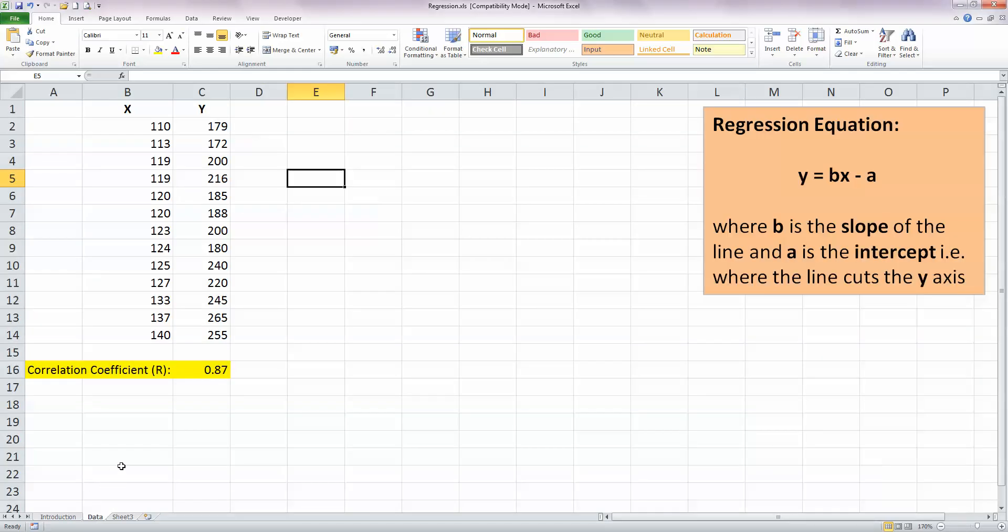So before we start, let's take a look at our data. We've got two sets of data representing variable x and variable y. We've got some values for each of those data here. And I've already calculated the correlation coefficient r for these data and the value of 0.87 indicates a very strong positive correlation between these two sets of data.